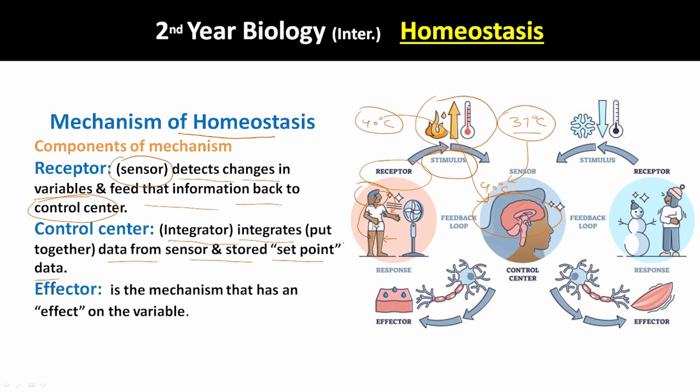Now, what is an effector? The effector produces the action. For example, if I put my hand on fire, the receptor senses it and sends a message to the brain, and the brain sends a message to my hand. My hand is the effector — the cells, the tissues, the organs which are capturing the stimulus.